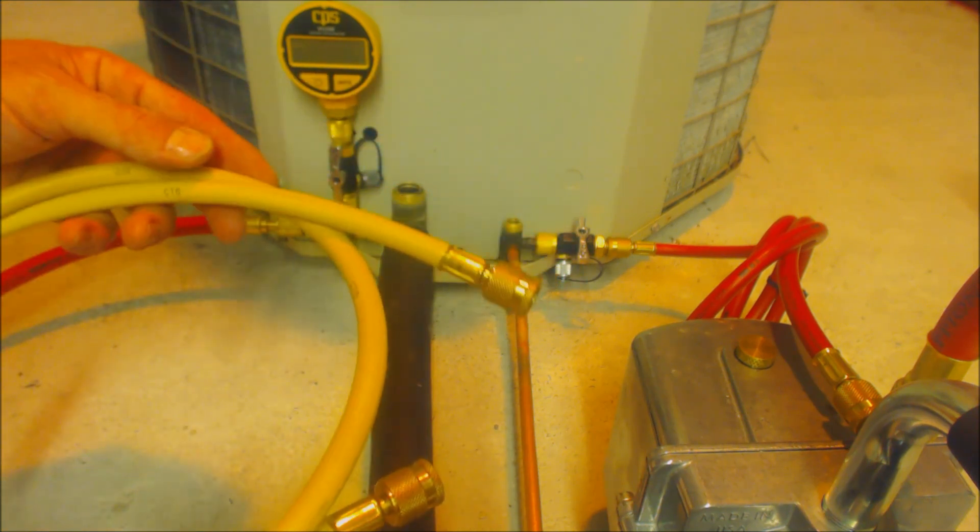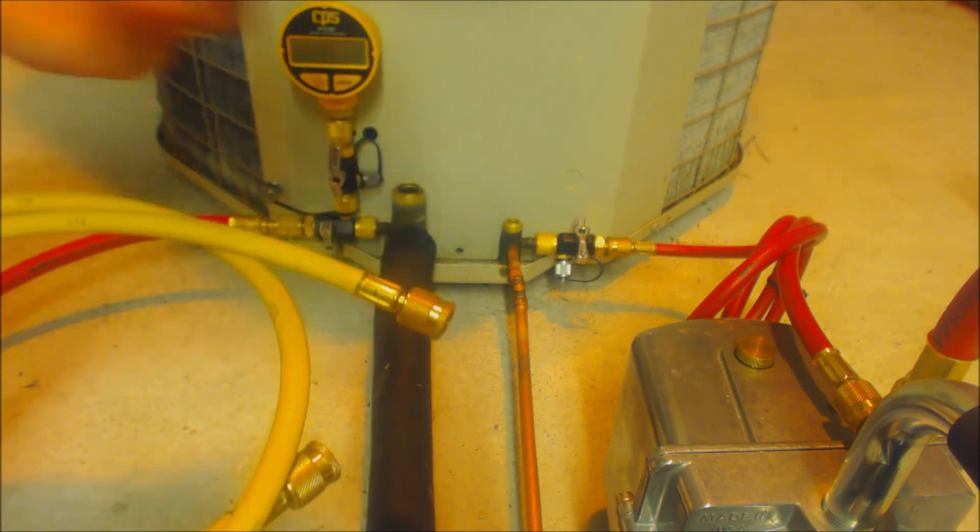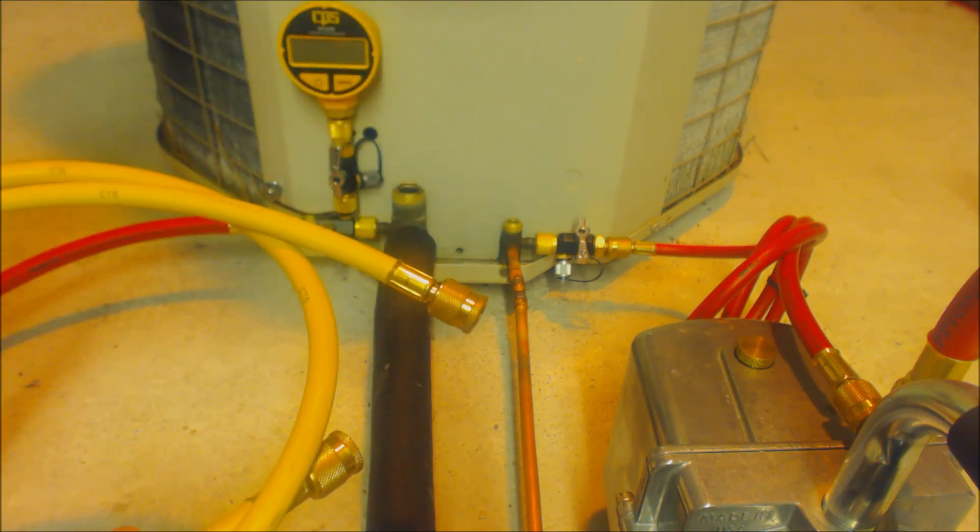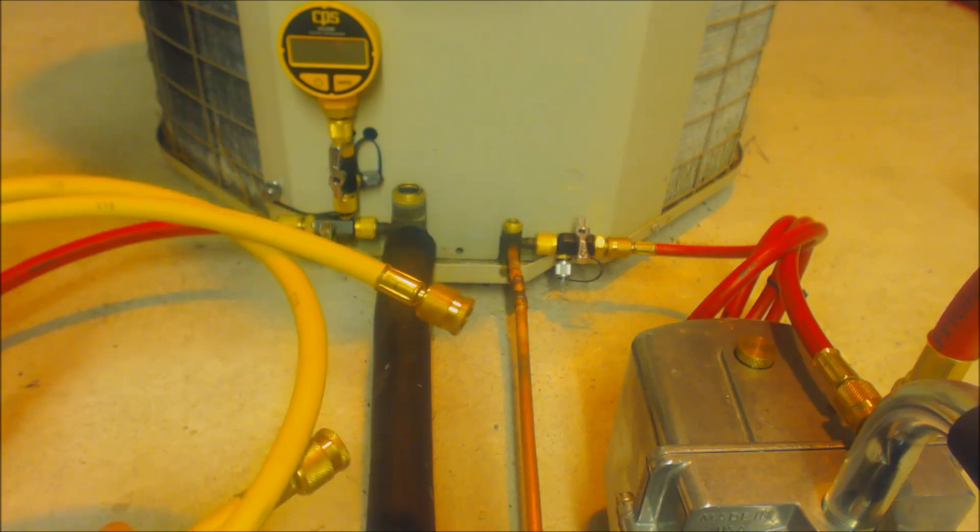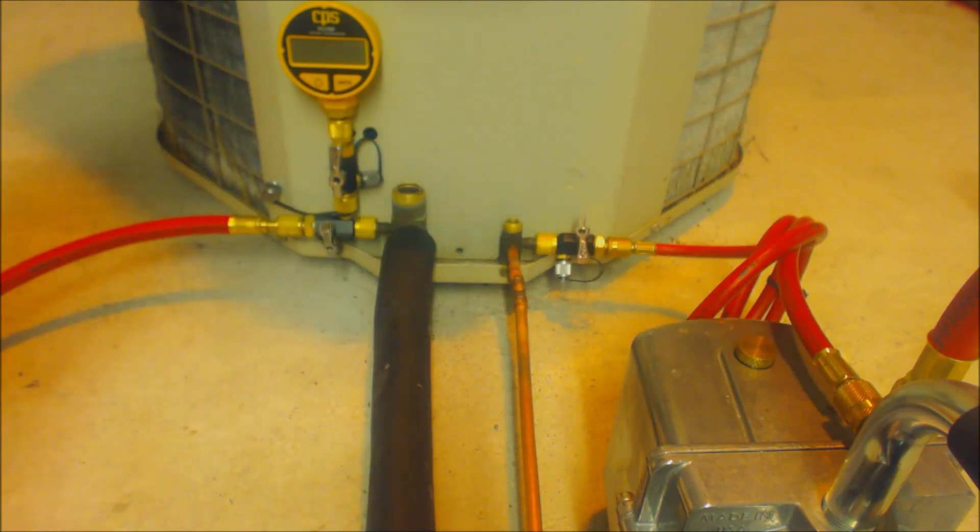So what I recommend is that you try not to go through the manifold set. You can, especially if it's a new set and it's nice and tight, but it's best to just attach it from the vacuum pump directly to the system in order to get a deep vacuum and to take some of the worries out of your head.